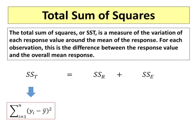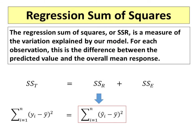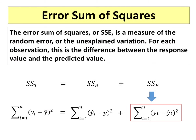The total sum of squares, or SST, is a measure of the variation of each response value around the mean of the response. For each observation, this is the difference between the response value and the overall mean response. The regression sum of squares, or SSR, is a measure of the variation explained by our model. For each observation, this is the difference between the predicted value and the overall mean response. The error sum of squares, or SSE, is a measure of the random error, or the unexplained variation. For each observation, this is the difference between the response value and the predicted value.